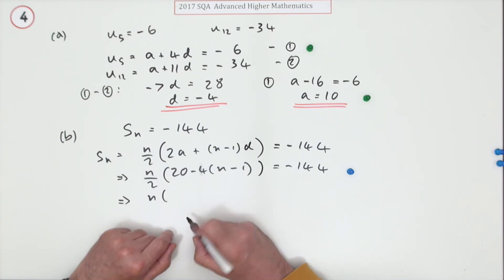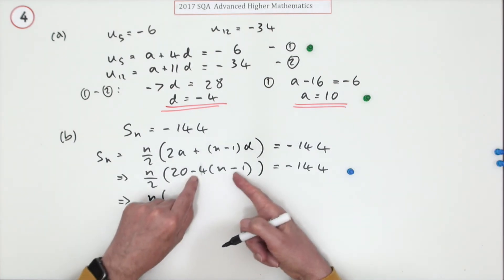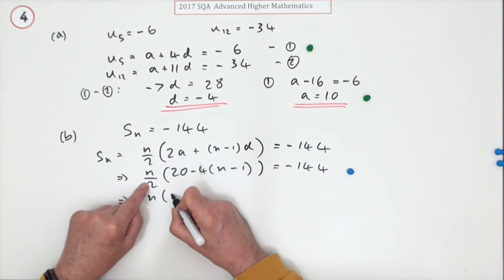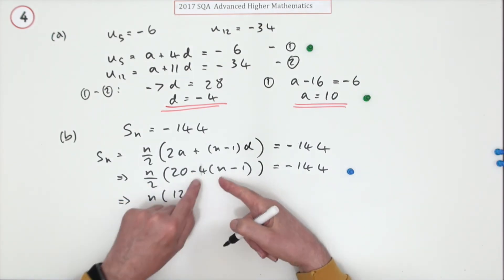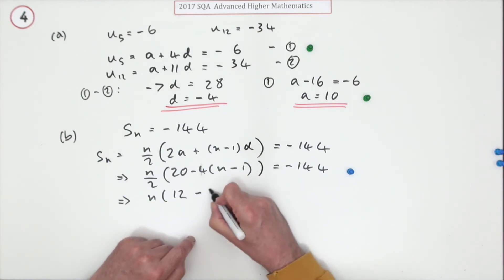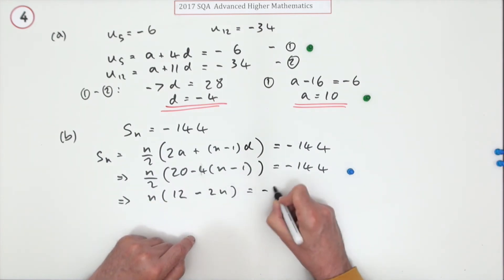I've got n times, I'll just do this inside the bracket first of all, because that would be 20 plus 4 which is 24. Dividing it by the 2 makes that a 12. That would be minus 4, so that drops to minus 2n equals negative 144.